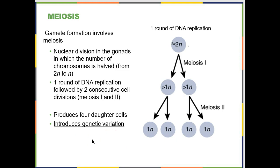Meiosis does two important things: it cuts the chromosome number in half, and it induces genetic variation. It does so through two ways — first, what you pass on to your offspring is a mix of your mother's and father's chromosomes, shuffling the deck. There's even more mixing that takes place, which we'll talk about in a few minutes.